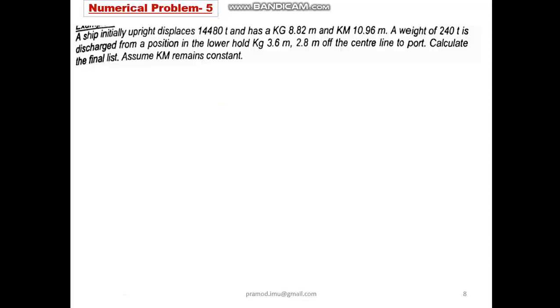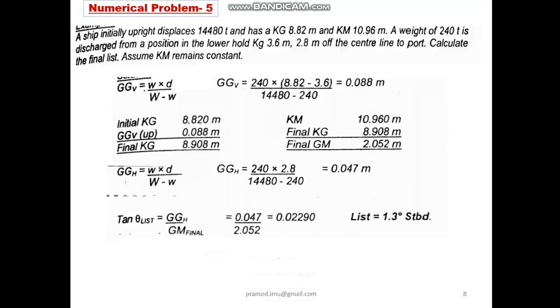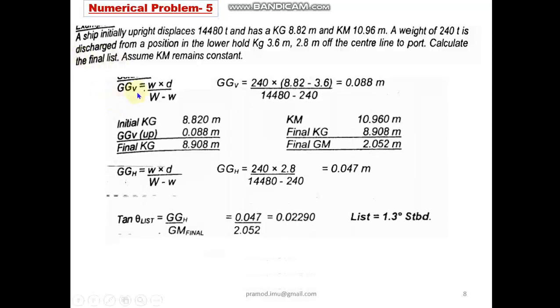The same situation, again the approach is the same. GGv, the vertical shift in center of gravity, w × d / W. Here it will be subtraction. The final displacement will be the displacement of the vessel minus the weight of the mass removed. So that we will get in terms of the distance, the KG 8.82 minus 3.6 in the vertical plane. GGv is 0.088 meters. That value we are adding to the KG, we get final KG 8.908.